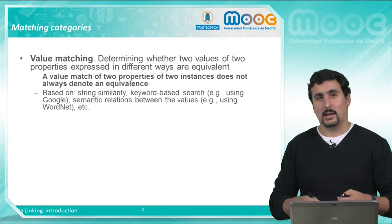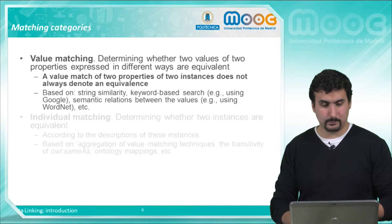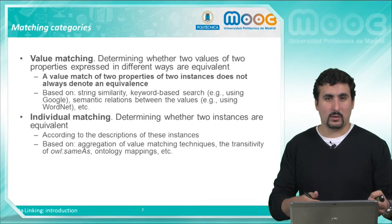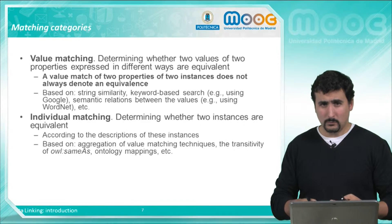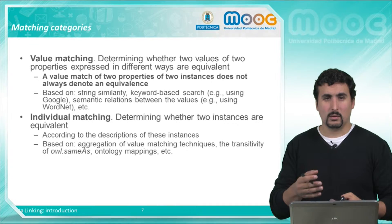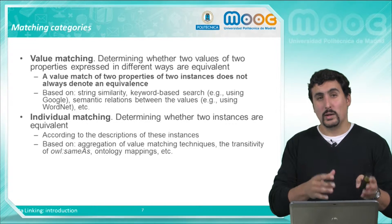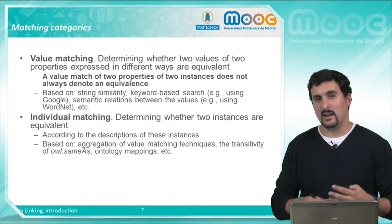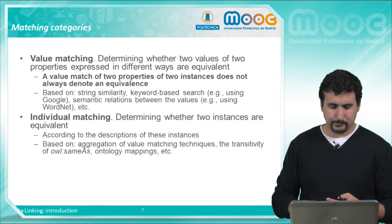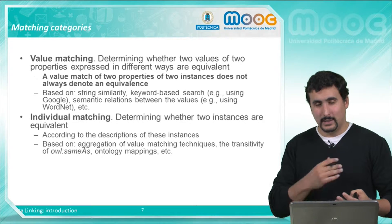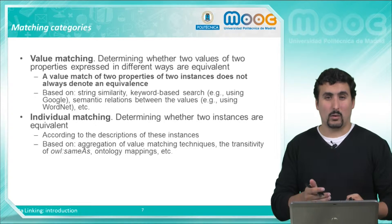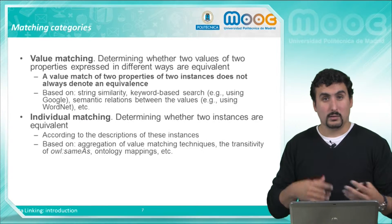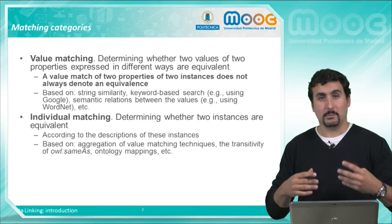For that we need to ensure that they are matched at the individual level. We can use the description of instances such as the RDFS label or comment introduced in the RDF video, or other vocabularies such as Dublin Core. The goal here is to decide if two individuals represent the same real-world object. If the descriptions are similar enough, we can conclude that those individuals are probably the same at a certain confidence degree. We can use value matching techniques or rely on properties such as owl:sameAs, which identifies two individuals as equivalent, or use mappings between ontologies for aligning classes and finding matches between their individuals.